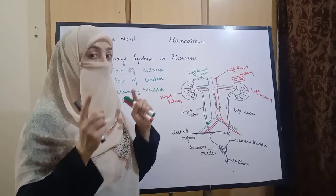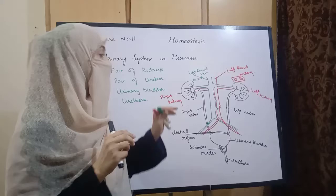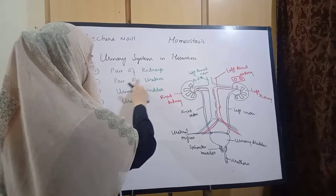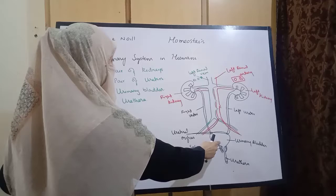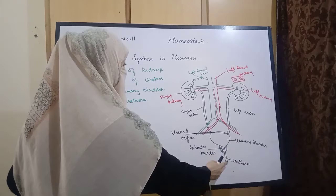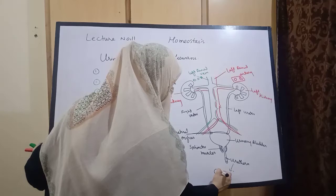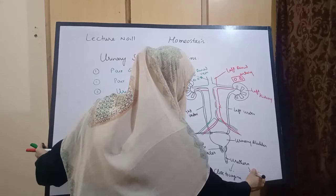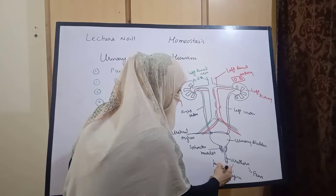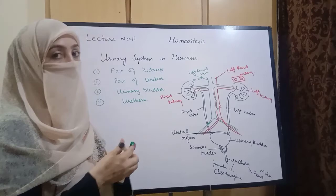یہ ایک simple سی diagram ہے جو آپ urinary system of humans کی theory کے ساتھ بنائیں گے تو آپ کو چار marks ملیں گے۔ Pair of kidneys: right kidney, left kidney۔ Pair of ureters: right ureter, left ureter۔ Urinary bladder — ureters جن سوراخوں سے urinary bladder میں کھلتے ہیں انہیں ureteral orifices کہتے ہیں۔ پھر urinary bladder سے آگے urethra ہے جو females میں close to vagina open ہوتا ہے اور males میں penis کے through body سے باہر urine کو نکالا جاتا ہے — urethra کی external opening۔